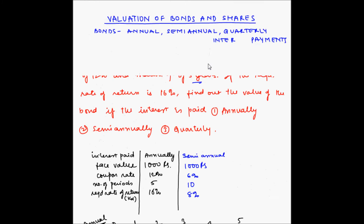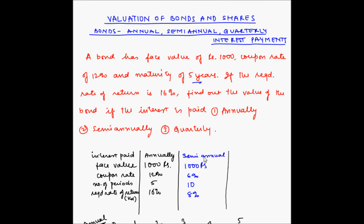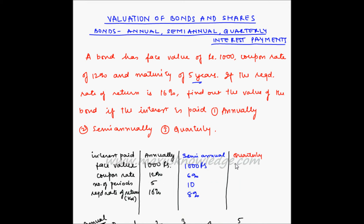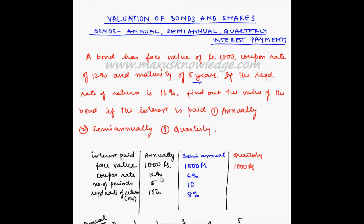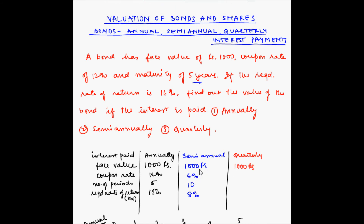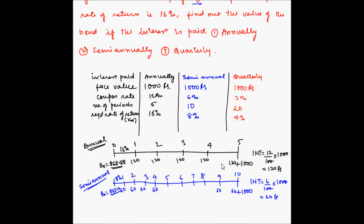Now let us take the third case: quarterly interest payments. The face value remains 1000 rupees. The coupon rate on an annual basis is 12%, semi-annual is 6%, and quarterly is half of semi-annual, so the coupon rate becomes 3%. The number of periods will be twice that of semi-annual, so it becomes 20, and the required rate of return KD will be half of semi-annual, which is 4%.